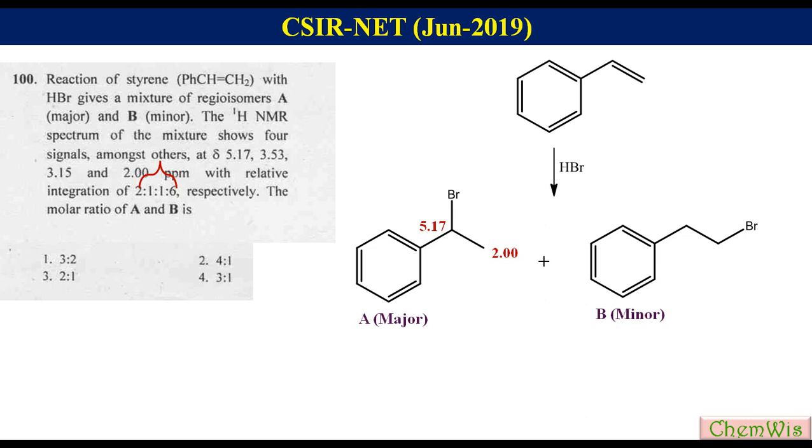The remaining two signals at 3.15 ppm and 3.53 ppm will belong to product B. The signal at 3.15 ppm belongs to benzylic CH2 and that at 3.53 will belong to CH2Br.